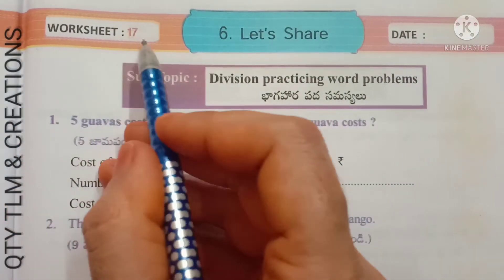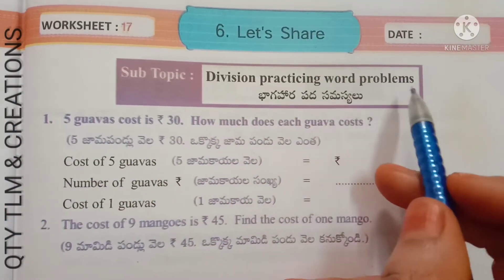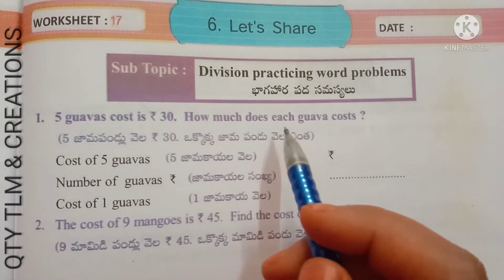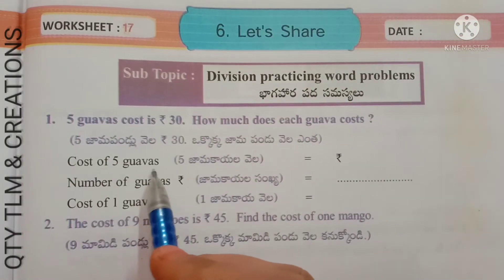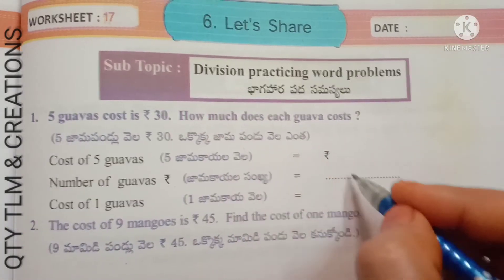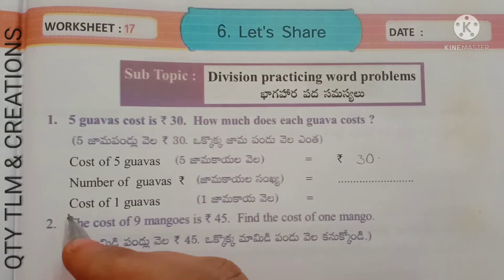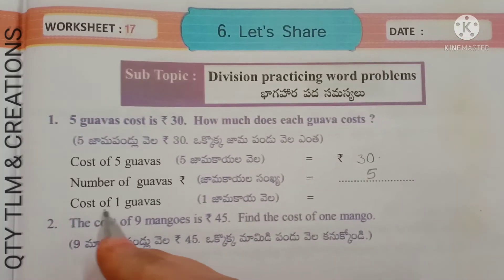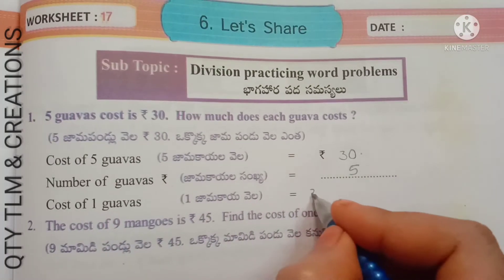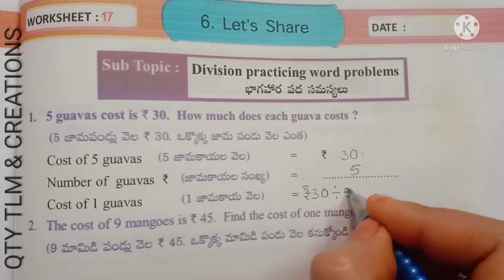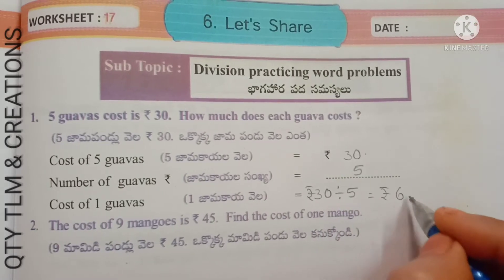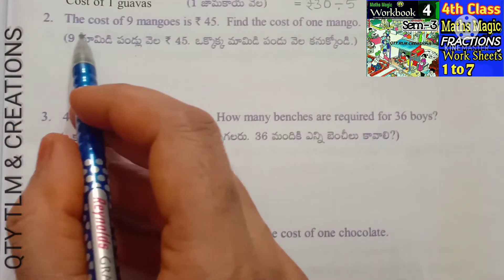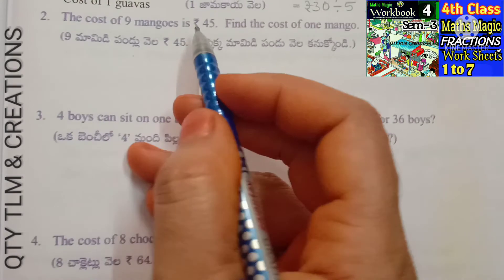Next, worksheet number 17, subtopic: division — practicing word problems. First question: 5 guavas cost 30 rupees. How much does each guava cost? Cost of 5 guavas = 30 rupees. Number of guavas = 5. Cost of 1 guava = 30 rupees divided by 5 = 6 rupees.